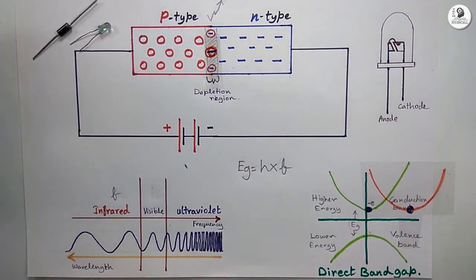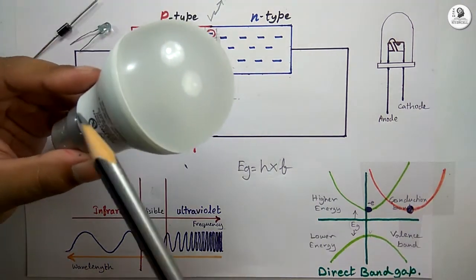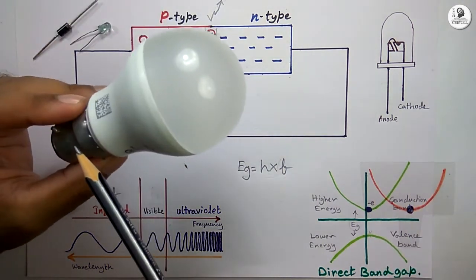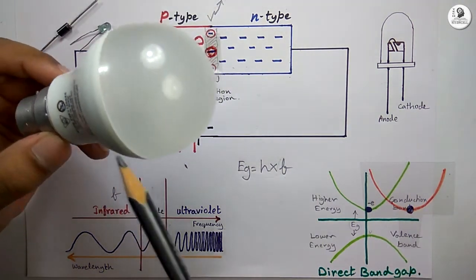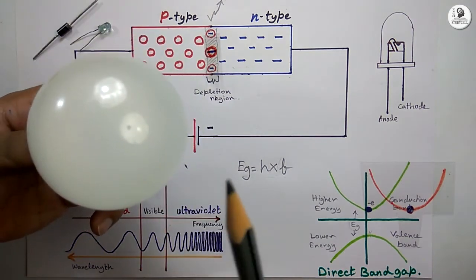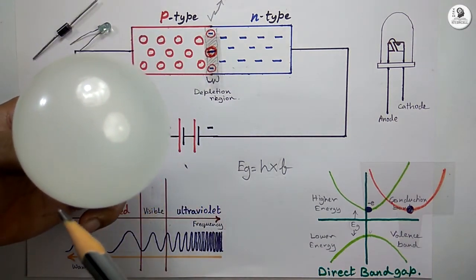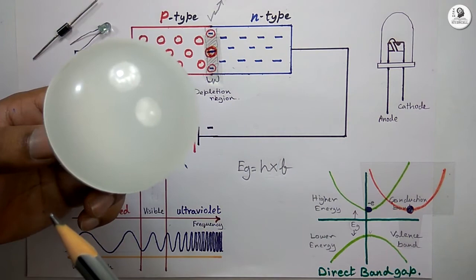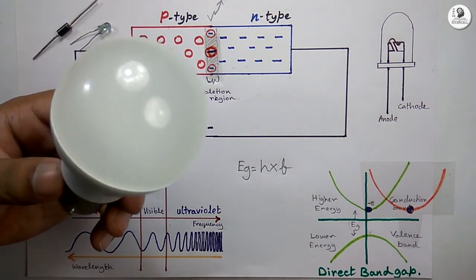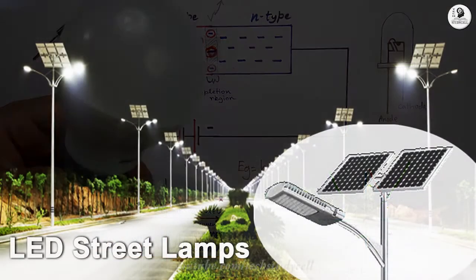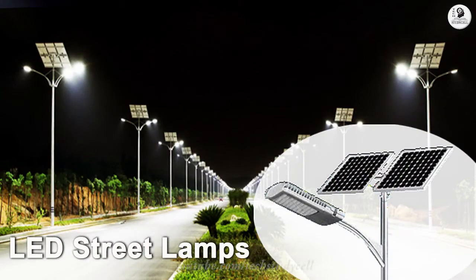Another advantage of the LED is that it starts glowing with full brightness as soon as we supply the forward voltage to this LED lamp. But for the gas discharge lamp, it takes certain 5 to 10 minutes to glow with full brightness. So nowadays, for street lights, the gas discharge lamp is replaced with LED.